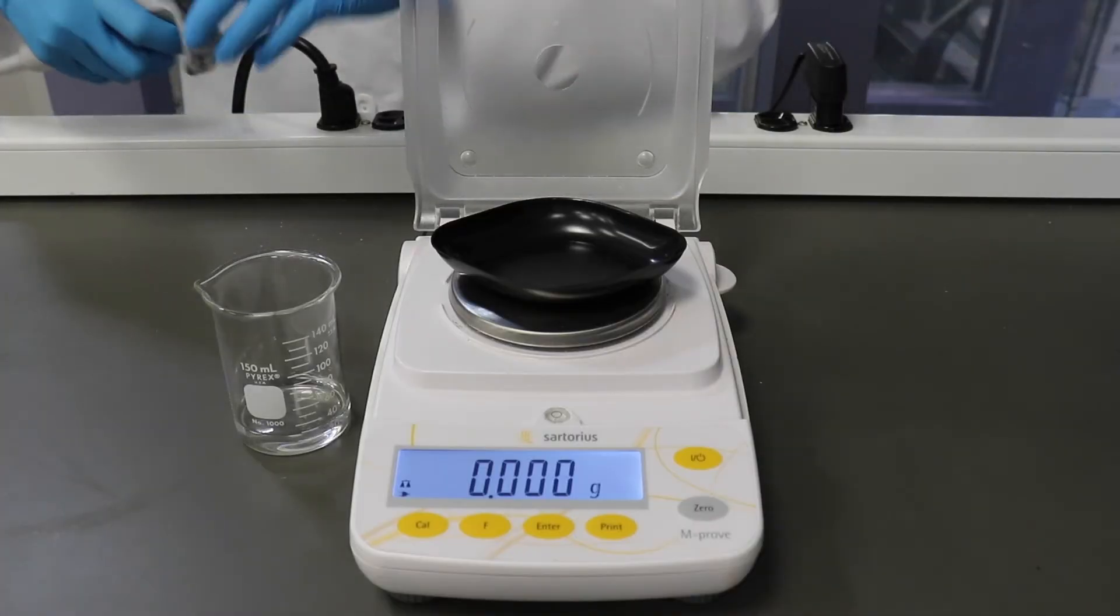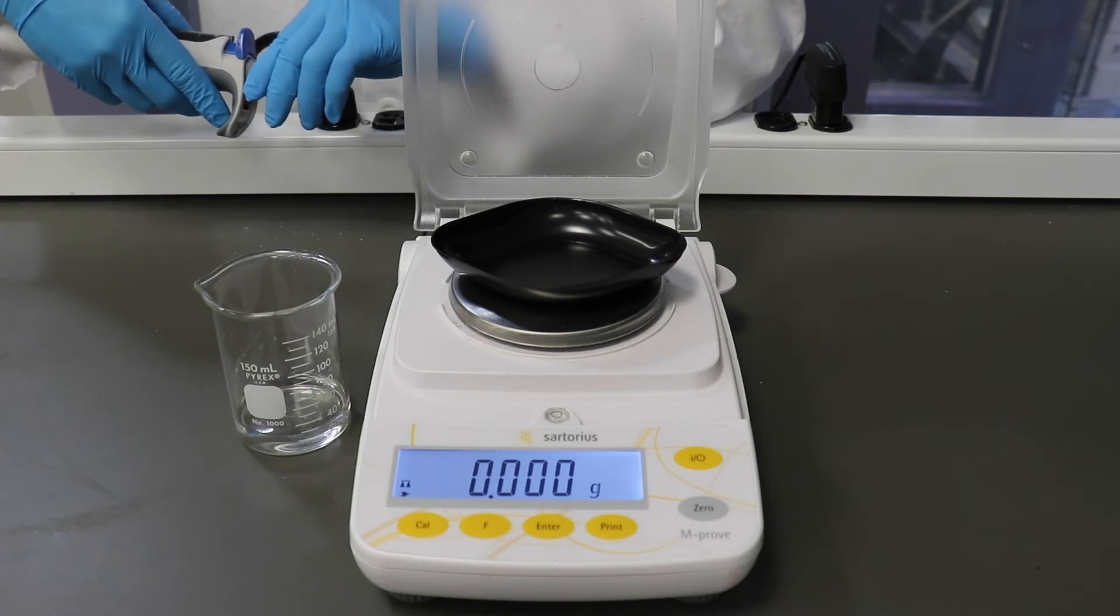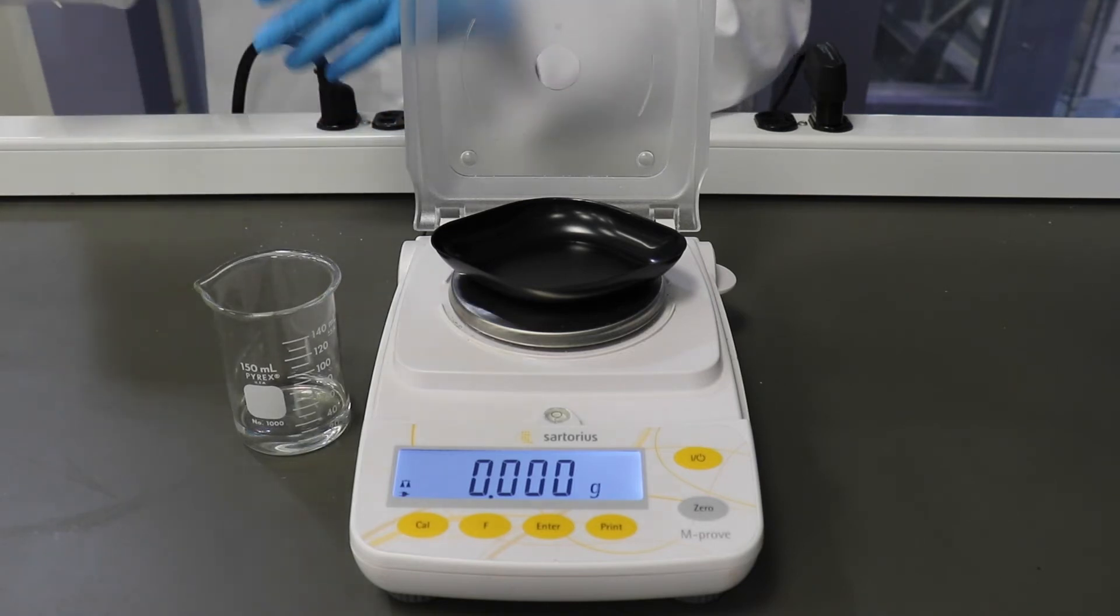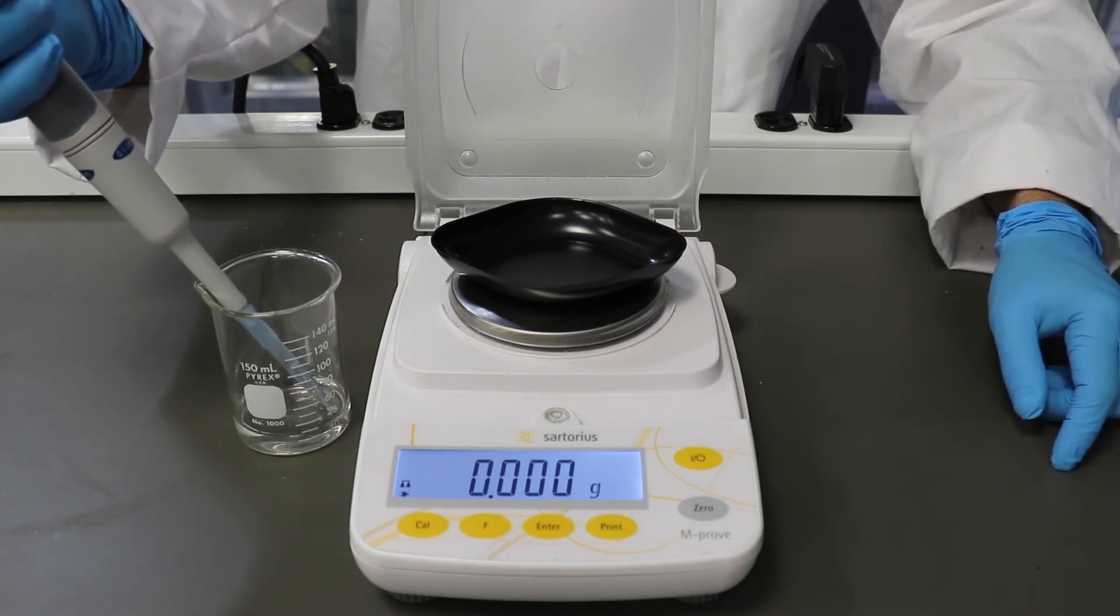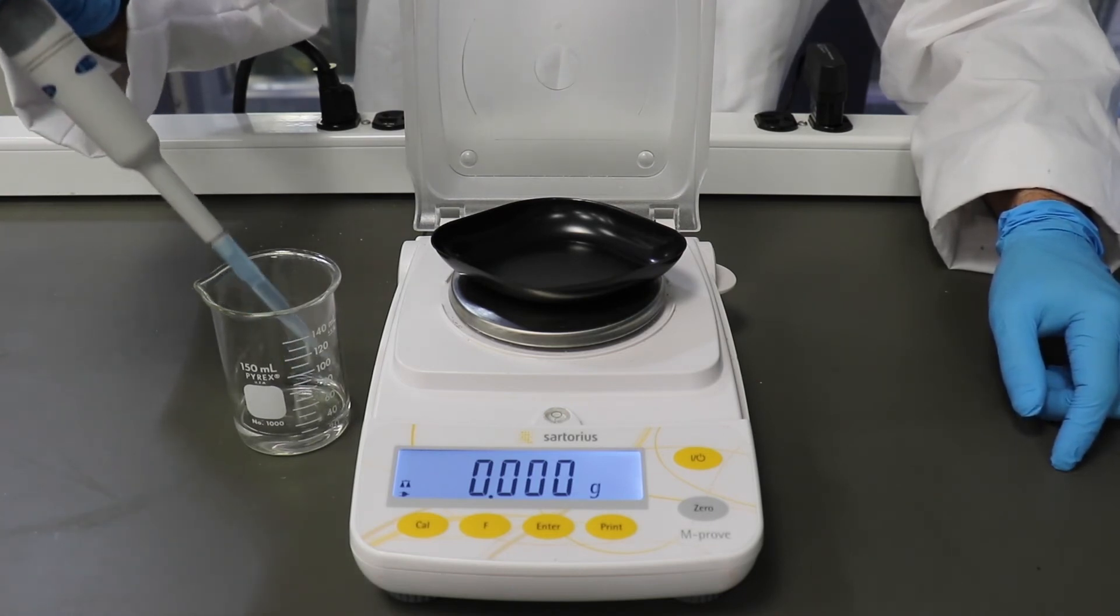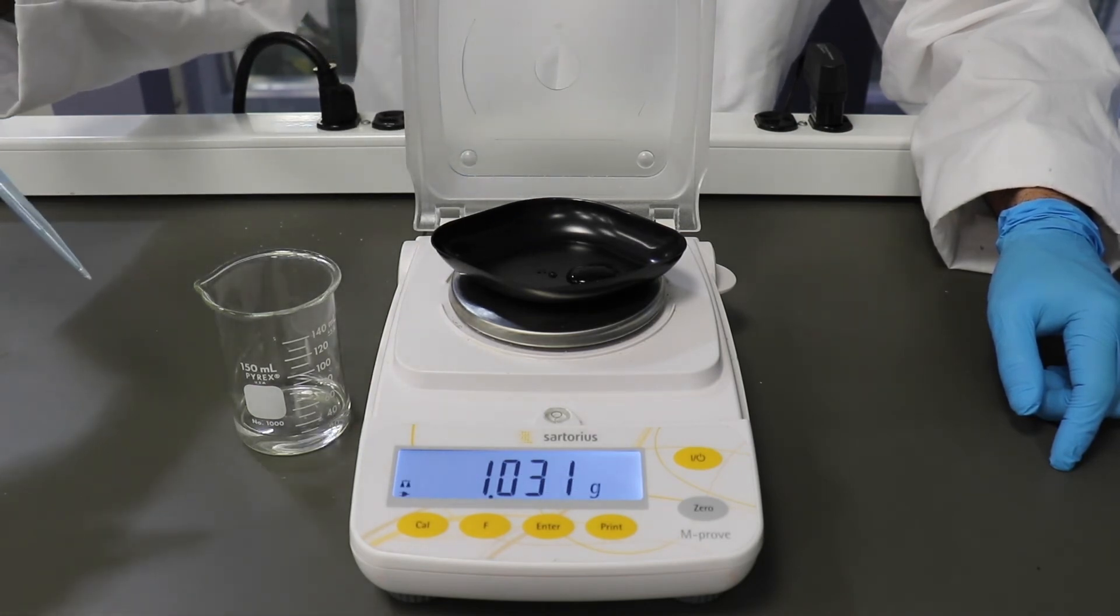Let's test the pipet to see if our adjustment was successful. Reset the volume to the maximum value or a baseline readout that you wish to test. Draw up the liquid and dispense it into the tared weigh boat on the balance. The weight displayed on the balance should approximately match the volume set on the micropipet, plus or minus say 5%.